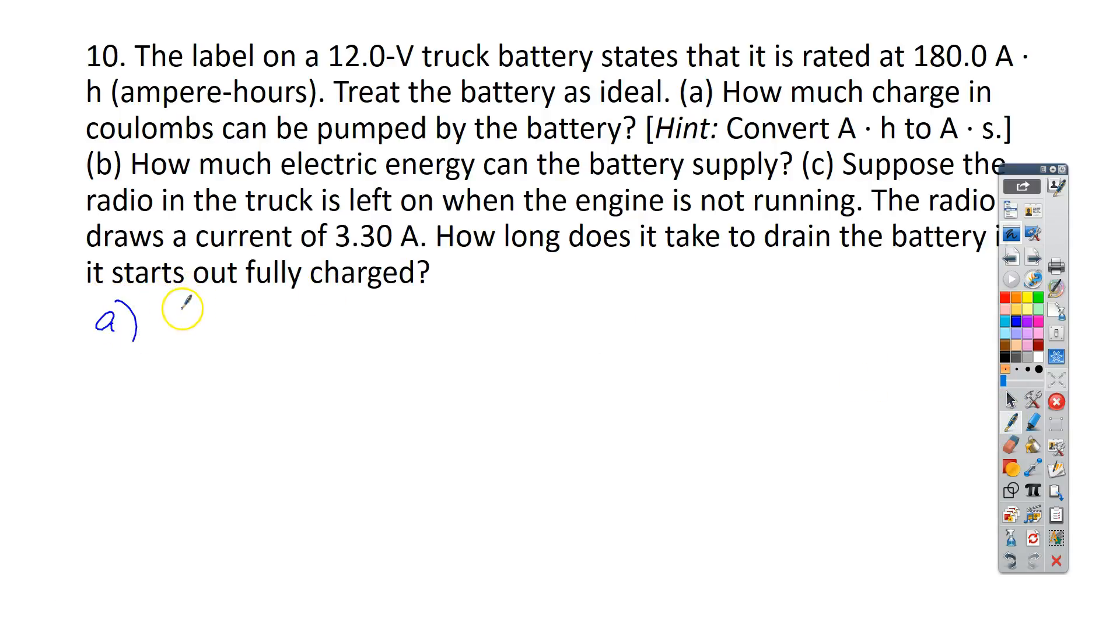Let's go ahead and do the first part. So this is letter A. We've got to convert the amp hours to amp seconds. So to do that, I've got 180 amp times an hour. And I want to convert that to seconds. So I want to get the hours out of the equation. So I'm going to cross it off by putting it on the bottom. And then on the top, I need to put seconds. And we know that there are 3,600 seconds in an hour. So now I'm left with my answer, which is 6.48 times 10 to the 5th coulombs. So that's how much charge is in the battery.